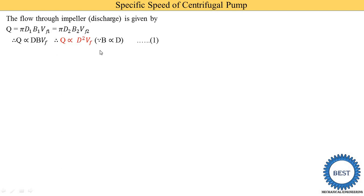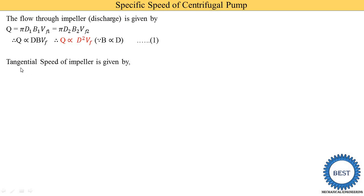Now we need to express D and Vf in other terms and substitute into equation 1 to find specific speed. We know the tangential speed of the impeller: u = πDN/60. Since π and 60 are constants, we remove them, giving u ∝ D·N. This is equation 2.